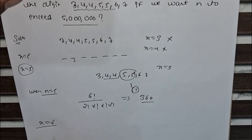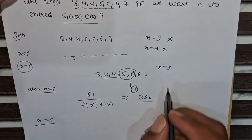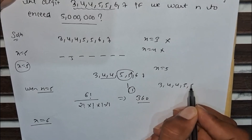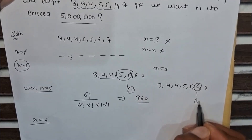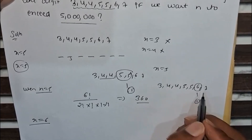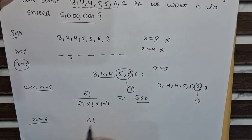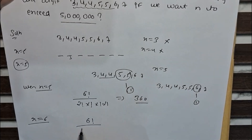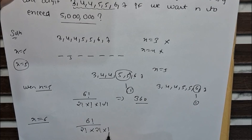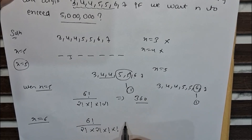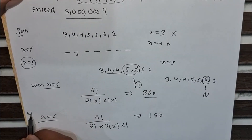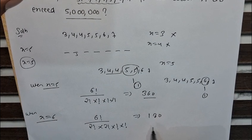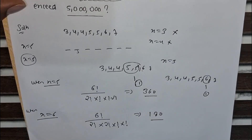When x equals to 6, the remaining digits are 3, 4, 4, 5, 5, 7 — 6 digits. The number of arrangements is 6! divided by 2! (for 4 appearing twice) divided by 2! (for 5 appearing twice), divided by 1! for 3, and 1! for 7. This gives 720/4 = 180. So when x equals 6, the number of entries is 180.